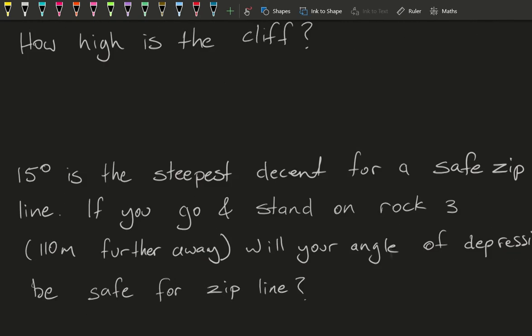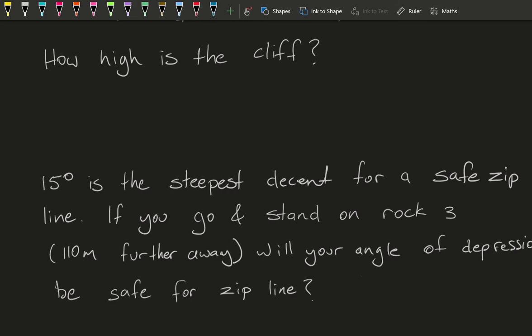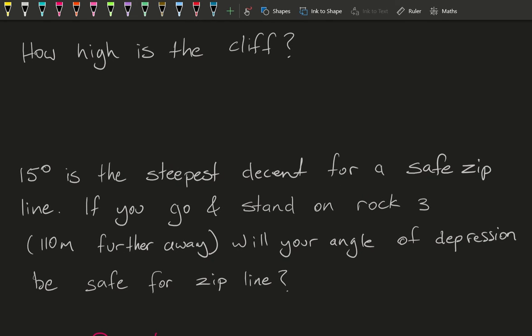And then looking at that zip line we just saw, you could see how fast they go. That really wasn't a steep angle of descent. So we're going to pretend that 15 degrees is the steepest descent for a zip line that's allowed. So if you go back to rock three, which is 110 meters further back, will the angle of depression be safe for a zip line? Let me summarize those questions again.